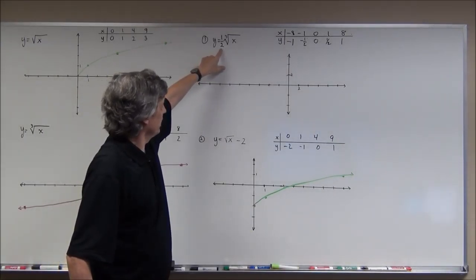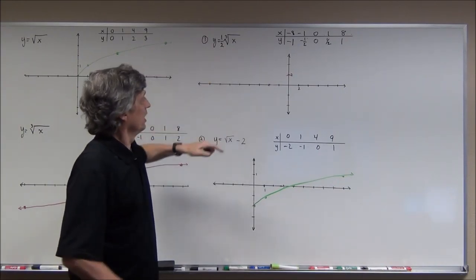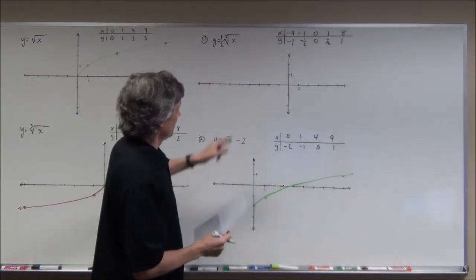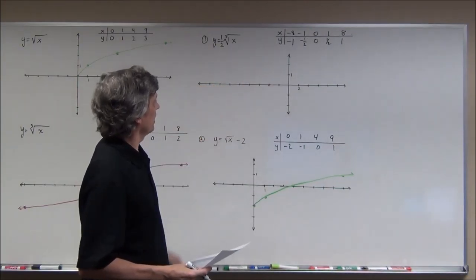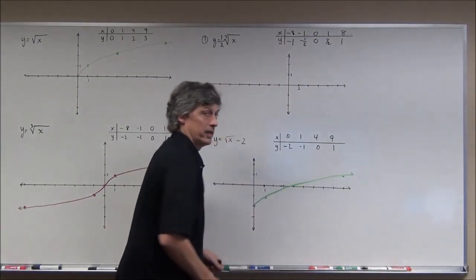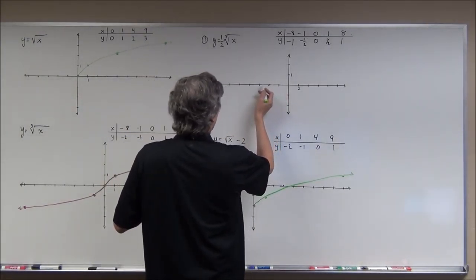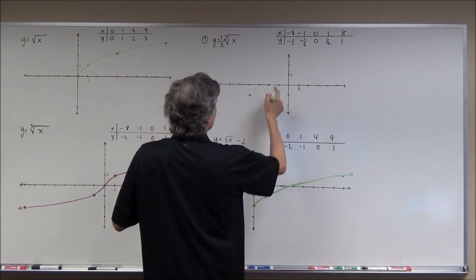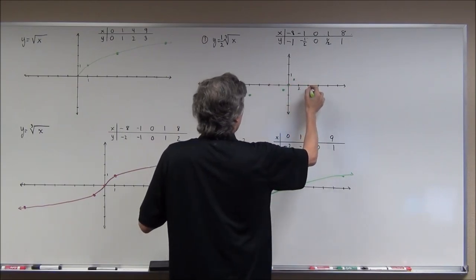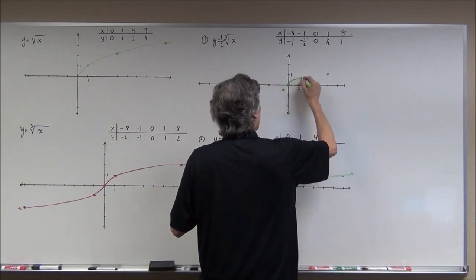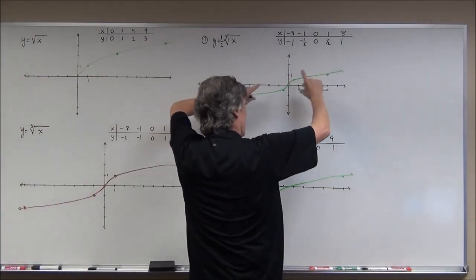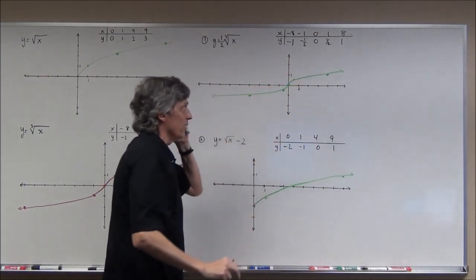This one half doesn't translate — it doesn't shift the graph right, left, up, or down. What it does is dilate it, compressing it down vertically. Plotting those five points on this graph — (−8, −1), (−1, −0.5), (0, 0), (1, 0.5), (8, 1) — you get the same shape as the parent cube root, but it's not as tall because the one half shrinks it down vertically.